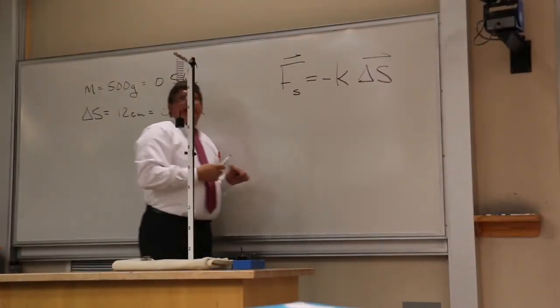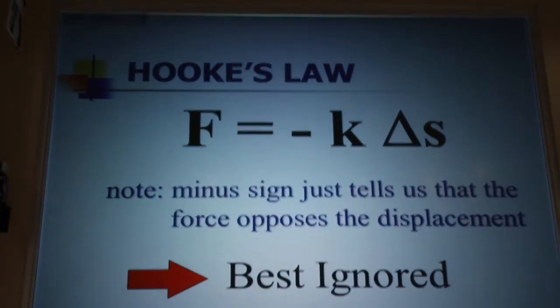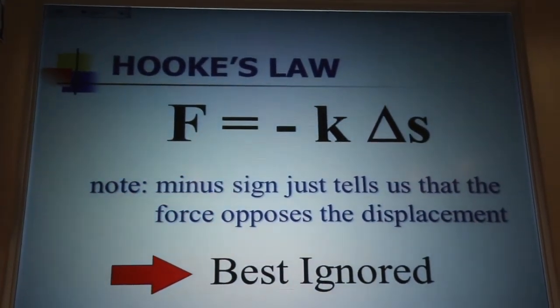Now there's that minus sign there that talks about direction. If you displace the spring down, the spring pulls up. Those are in opposite directions. But we typically ignore that minus sign because it really just tells you something obvious and it confuses when you try to use it to get answers. So usually we're just going to ignore that minus sign and use our gut to get directions.